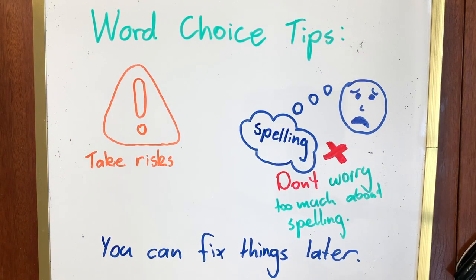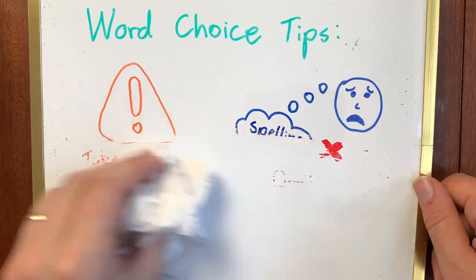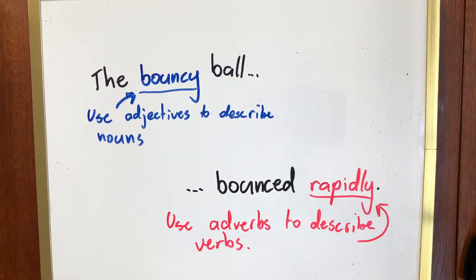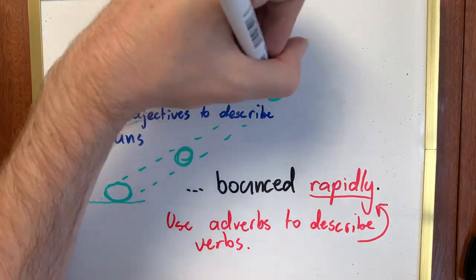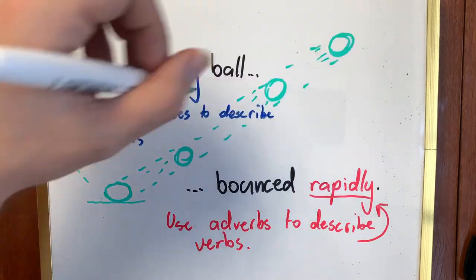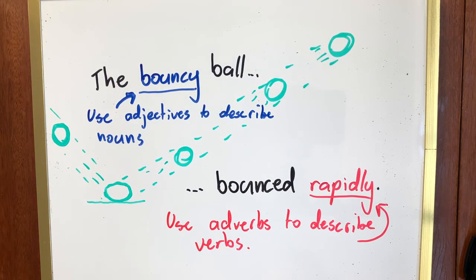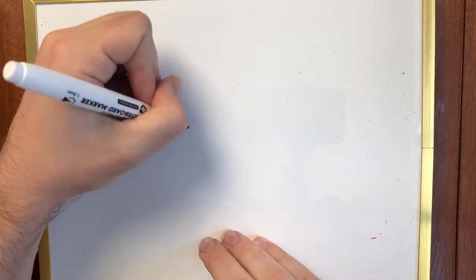Use adjectives to tell us more about nouns. Tell us more about the people, places, things, or feelings. Use adverbs to tell us about how an action was taken. Use precise verbs and nouns, depending on the meaning. And use more interesting language when you can. Mix it up.